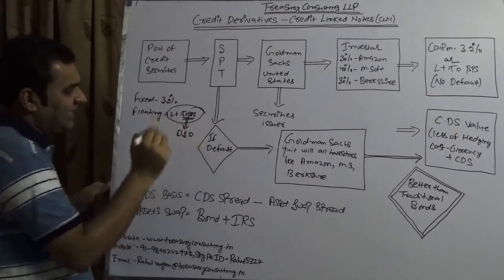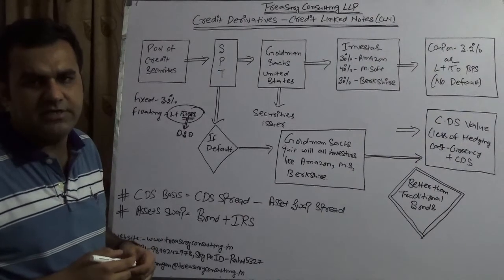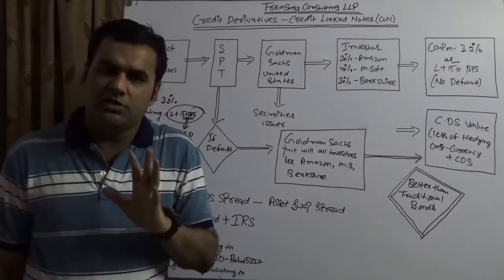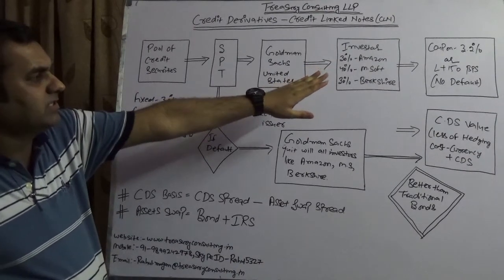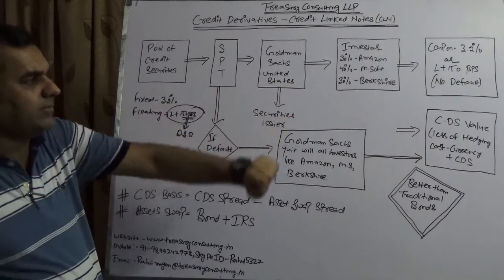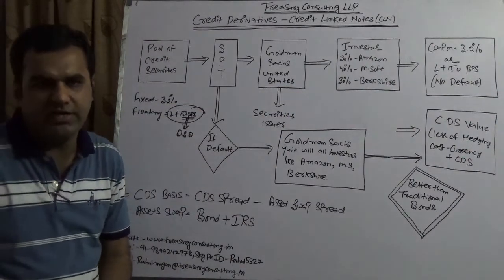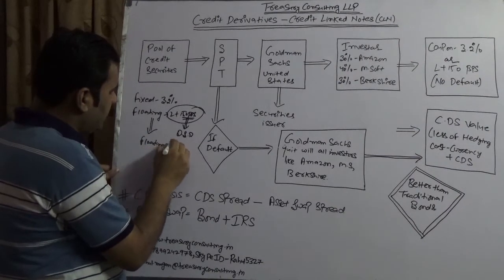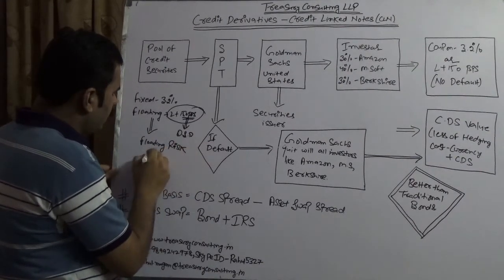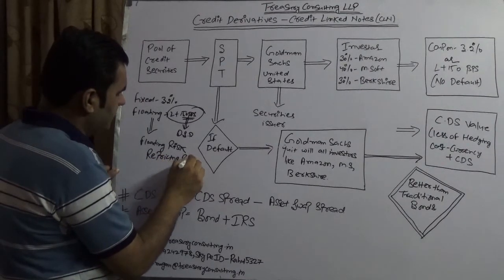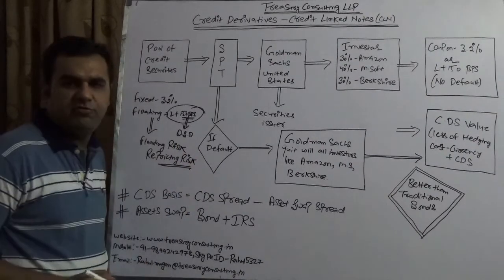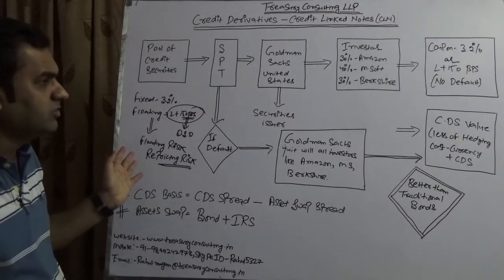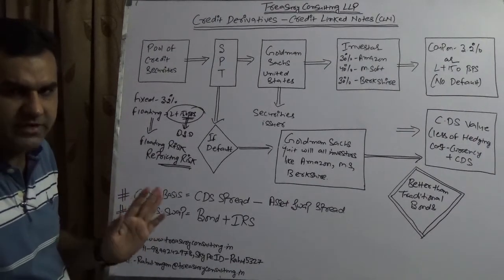The floating option is LIBOR plus 150 basis points. That 150 basis points is the QSD — Quality Spread Differential — decided based on the kind of clients involved. As long as there is no default, things continue and investors receive either 3.2% or LIBOR plus 150 basis points. However, choosing the floating rate creates floating risk and repricing risk for yourself. A future video will cover how to hedge credit linked notes using an overnight index swap.